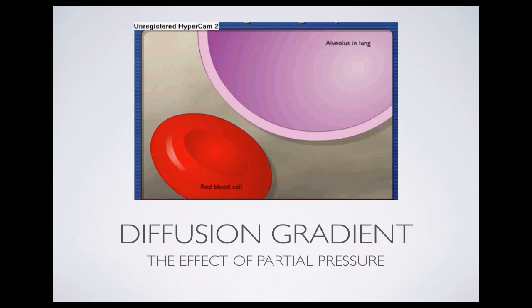Respiration serves as a means for the body to exchange gases with the atmosphere via the blood. The partial pressure of oxygen, PO2, in the air in the alveolar spaces in the lungs is greater than the PO2 in the blood, so oxygen diffuses into red blood cells from air in the lungs. Also, the partial pressure of carbon dioxide, PCO2, in the air in the lungs is less than the PCO2 in the blood, so carbon dioxide diffuses out from red blood cells and into the air in the lungs.